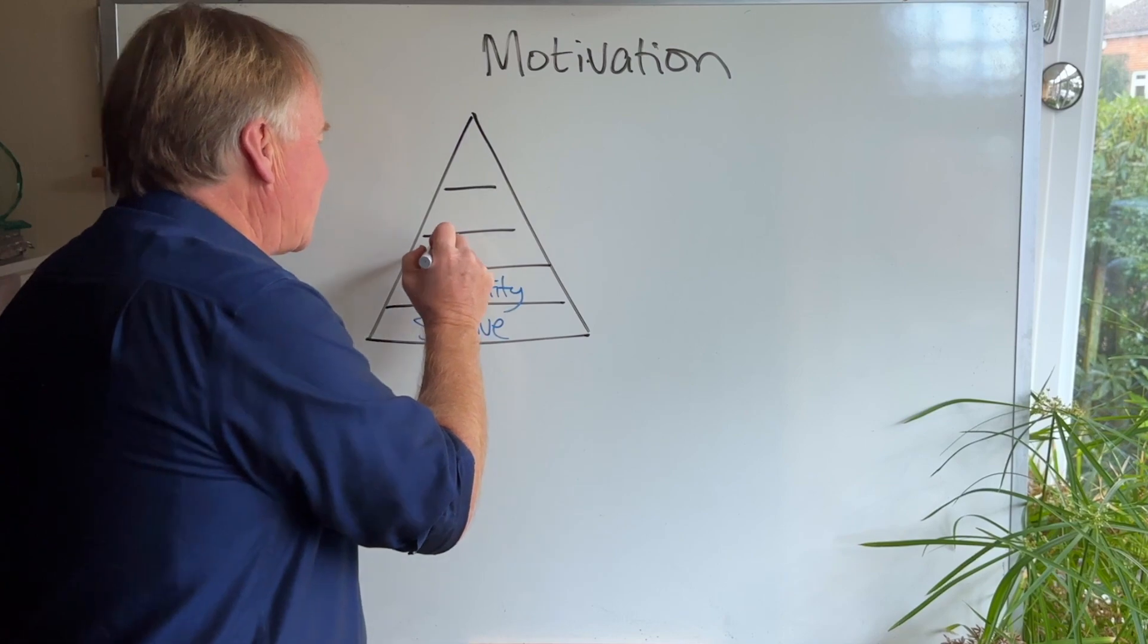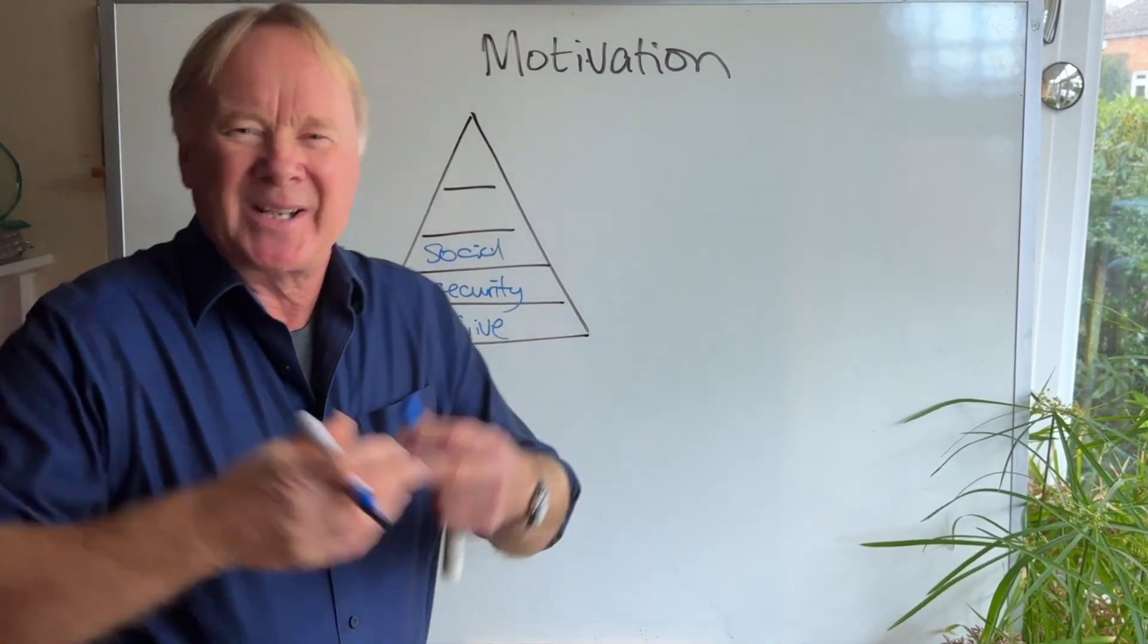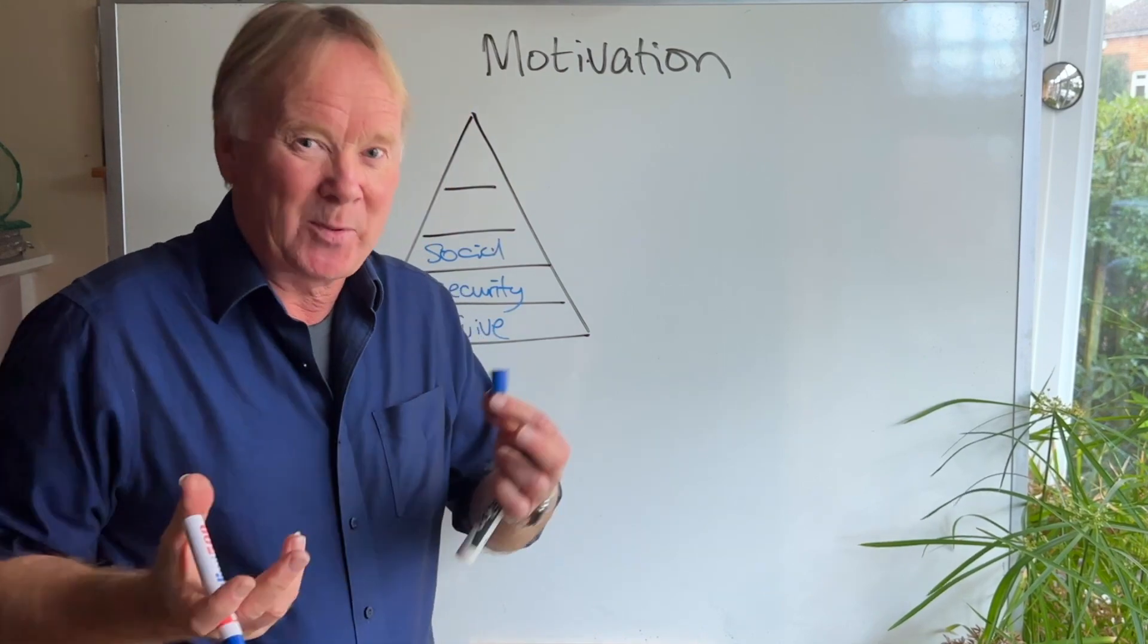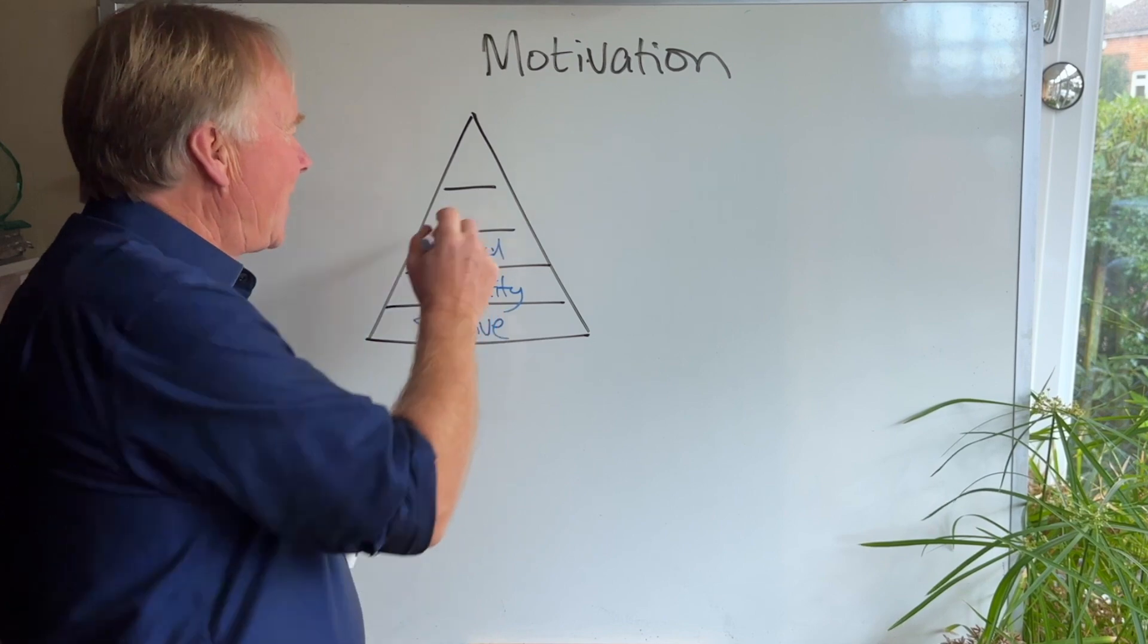The next level of Maslow is social needs. People want to feel a sense of belonging. So things like team meetings, somewhere nice where people can meet and eat food together, make people feel part of the company.